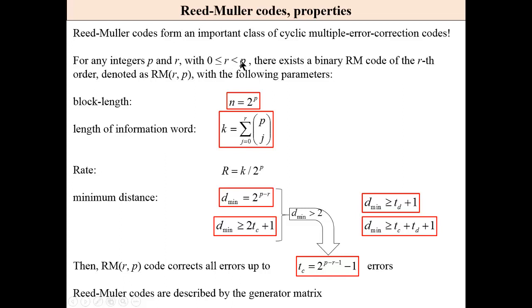There exists a binary RM code of the R-th order, denoted RM(R, P), with the following parameters: block length n is 2 to the power of P, which means the codeword length is 2, 4, 8, 16, and so on. The length of the information word is described by this formula.